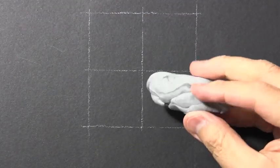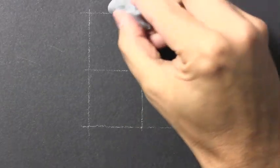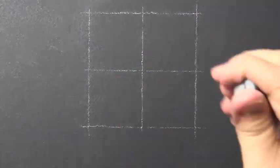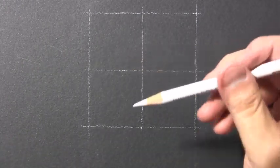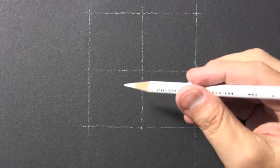You can see I went in with a kneaded eraser to even lighten up these lines a little in advance, knowing that I want to erase them all toward the end of the process. But now I am going to switch to a white colored pencil to begin putting down some of the basic guidelines.